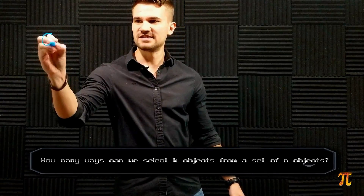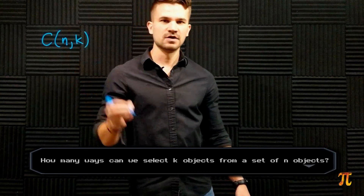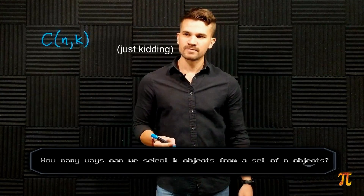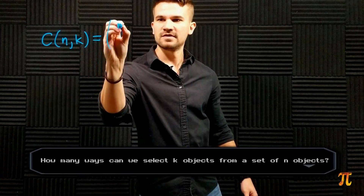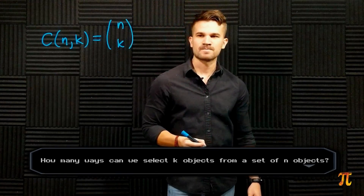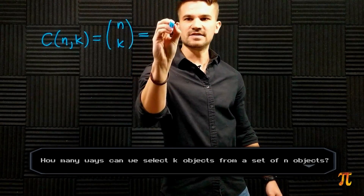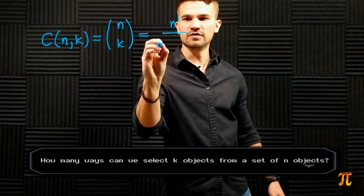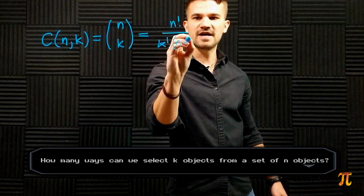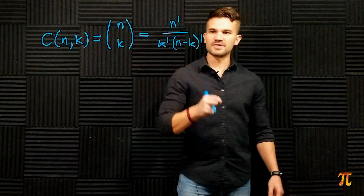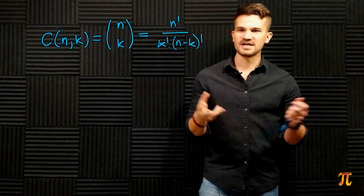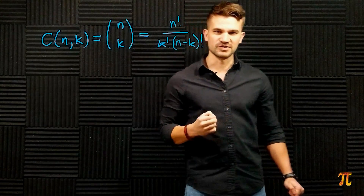Here's the formula he was talking about. We have a set of n objects — how many different ways can we select k of those objects? That's denoted C(n, k), or 'n choose k', and the formula is given by n factorial over k factorial times (n minus k) factorial. I agree with him that this is not very intuitive — it's not immediately apparent why this monstrosity